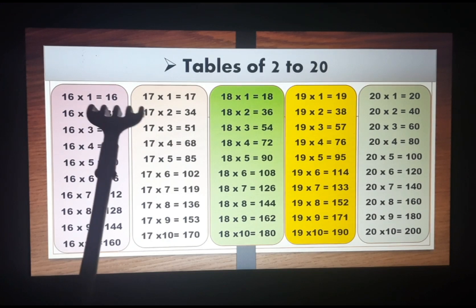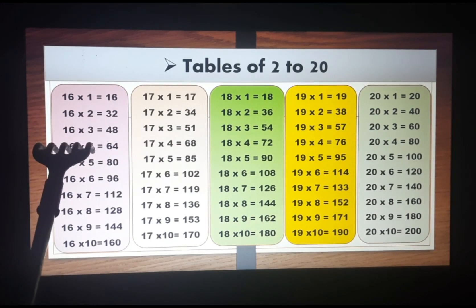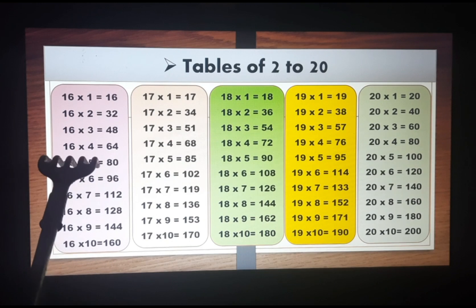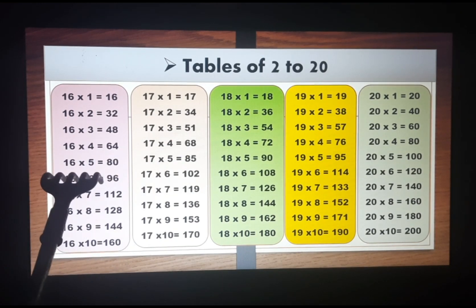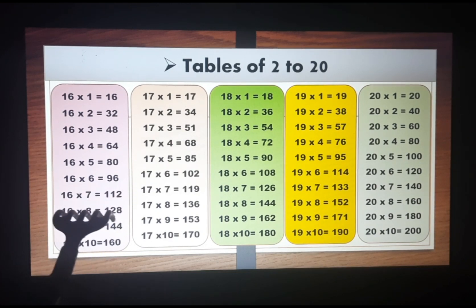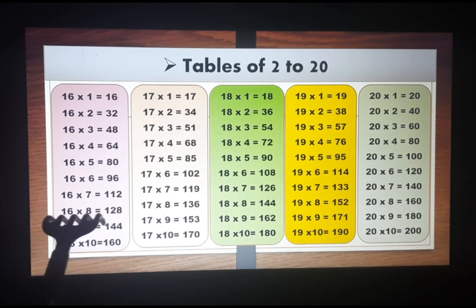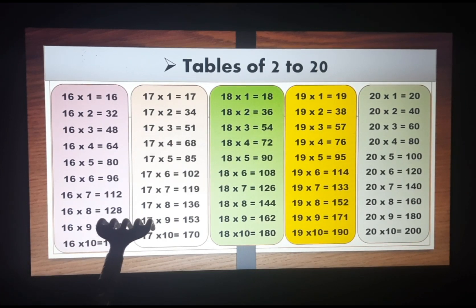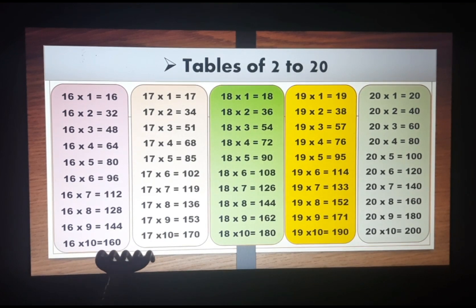Sixteen ones are sixteen, sixteen twos are thirty-two, sixteen threes are forty-eight, sixteen fours are sixty-four, sixteen fives are eighty, sixteen sixes are ninety-six, sixteen sevens are one hundred twelve, sixteen eights are one hundred twenty-eight, sixteen nines are one hundred forty-four, and sixteen tens are one hundred sixty.